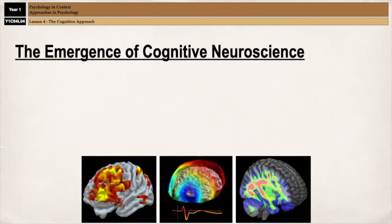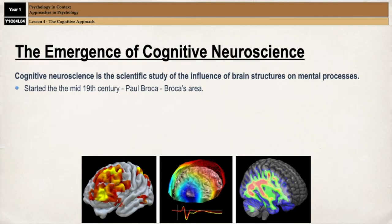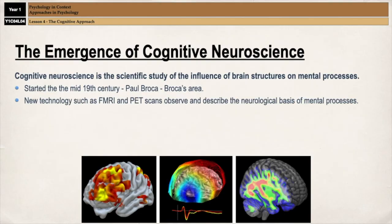It's also about how structures of the brain, like the amygdala, are related to emotion, or where in the brain memory is located. The very beginning of cognitive neuroscience can be traced back to around the mid-19th century, where Paul Broca identified that damage to an area of the frontal lobe could impair speech production. That area is now called Broca's area, and it's in the left frontal lobe. Over the last 20 years, cognitive neuroscience has advanced massively due to advances in brain imaging techniques such as fMRIs and PET scans, which have allowed scientists to systematically observe and describe the neurological basis of mental processes.